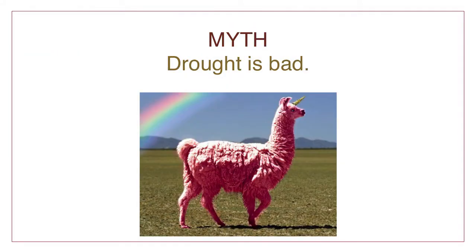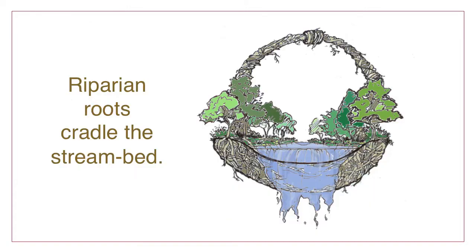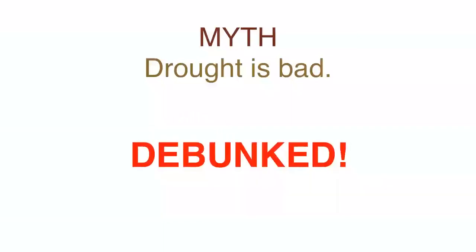No one likes drought, but the riparian area is one place drought can be appreciated. During drought, riparian plant roots grow deeper and deeper, chasing the falling water table. Eventually, these roots meet each other under the stream channel, creating an interlaced mass. This cradles the channel, holding it in place when flows return, much like a basket made of riparian water-holding roots. Droughts are not fun, but they allow riparian areas to develop an underground root structure that strengthens the channel. Myth debunked.